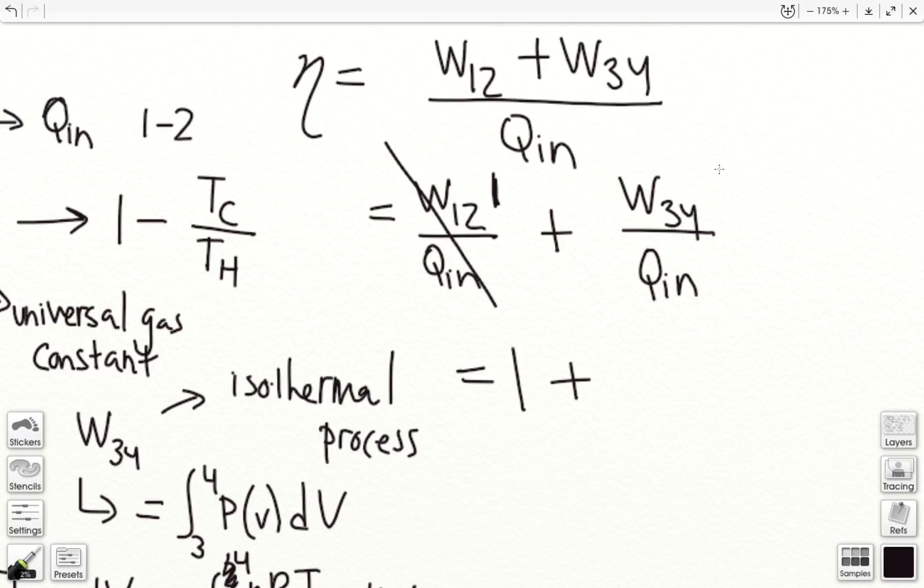And now the expression from work from 3 to 4, as we found earlier, was n, r, t, c, ln of v4 over v3.